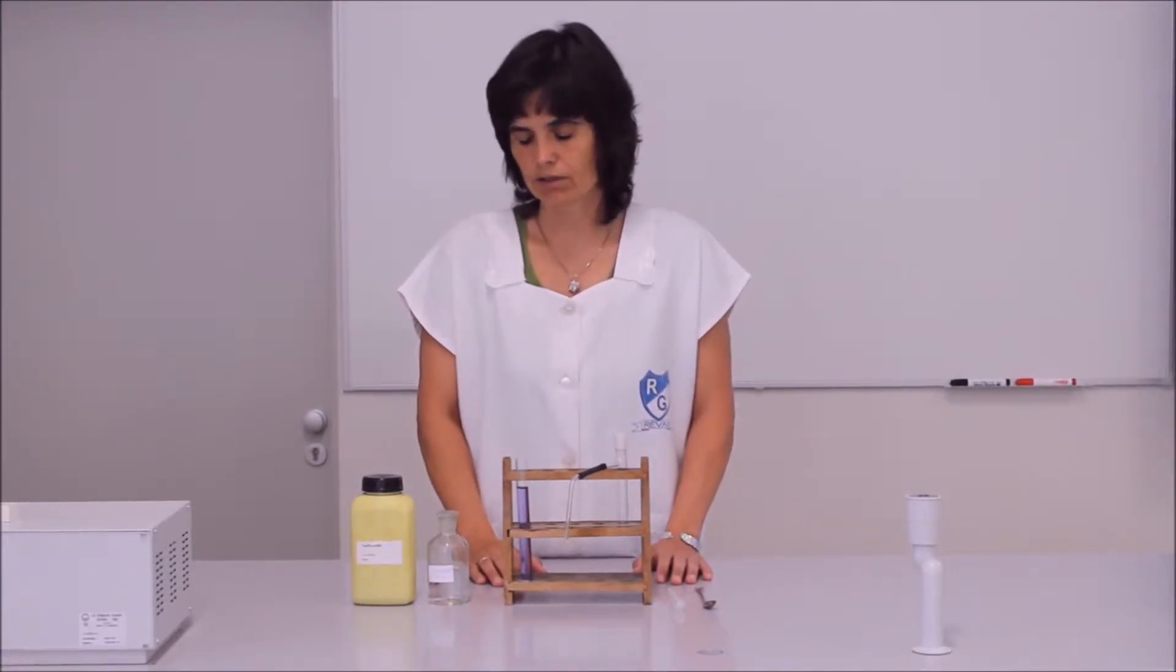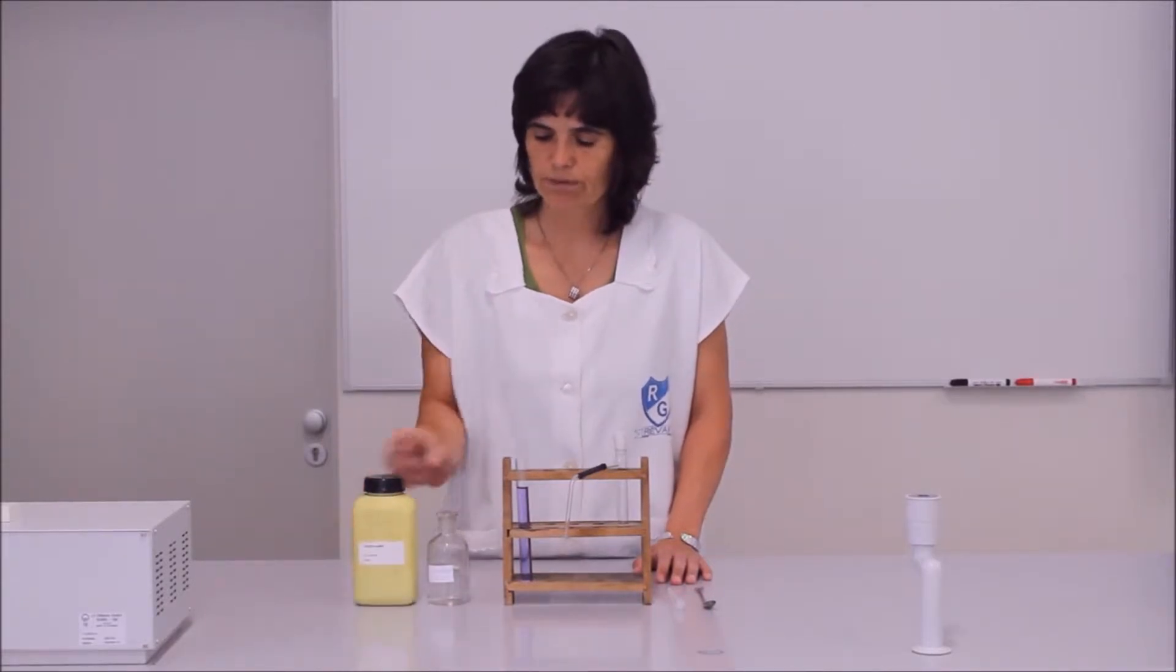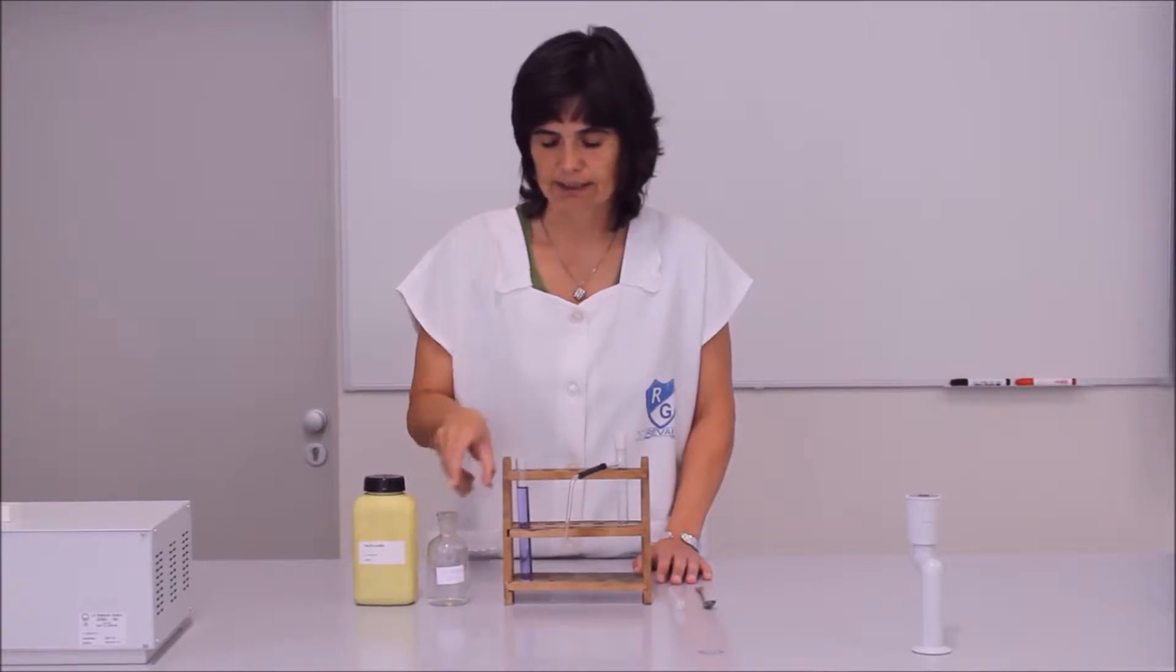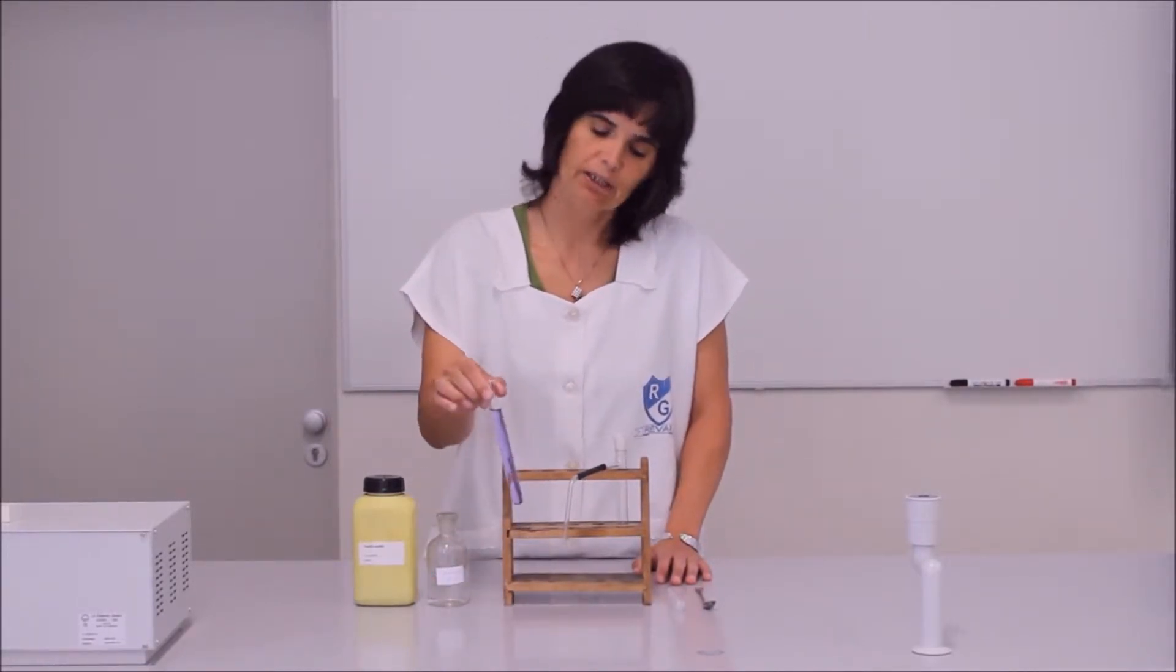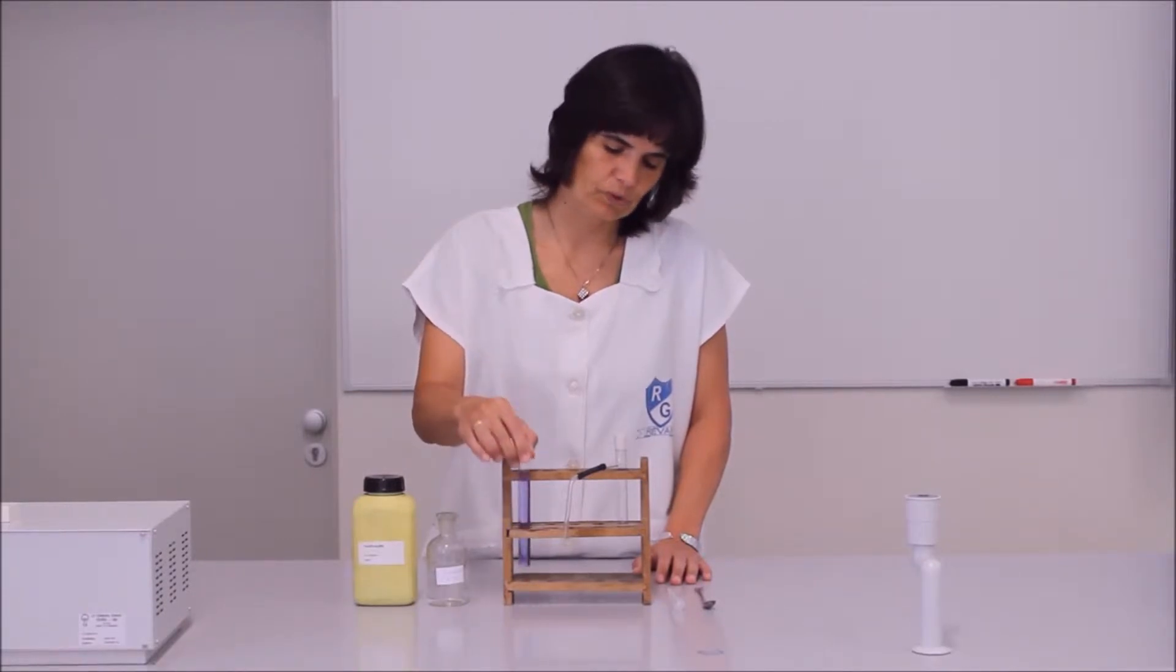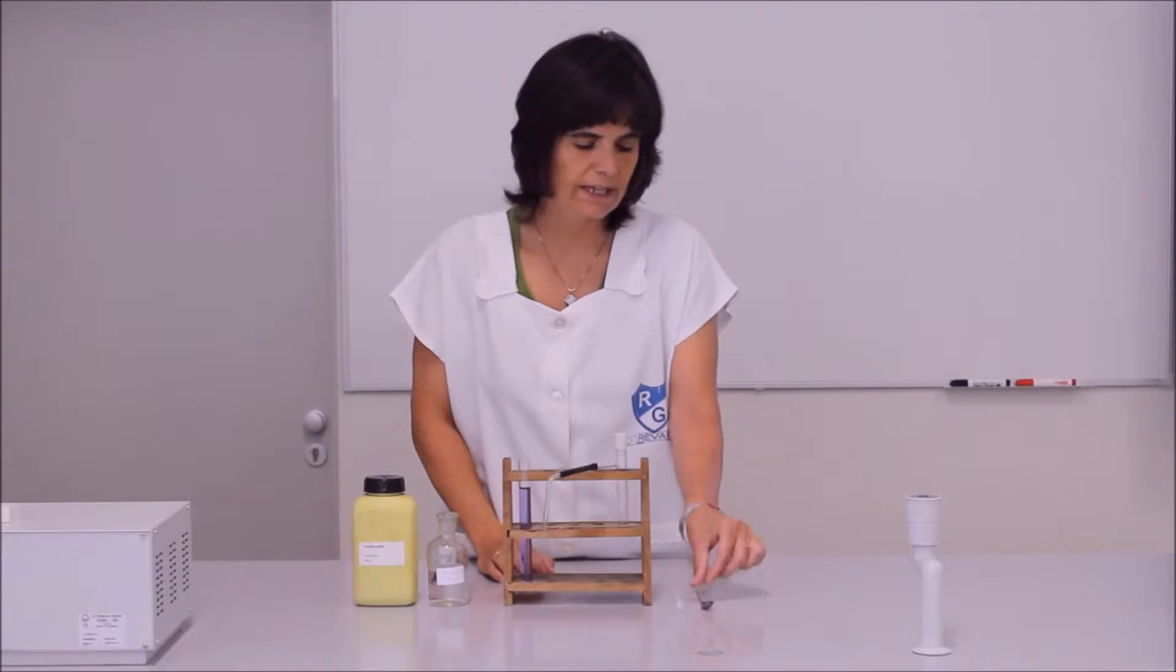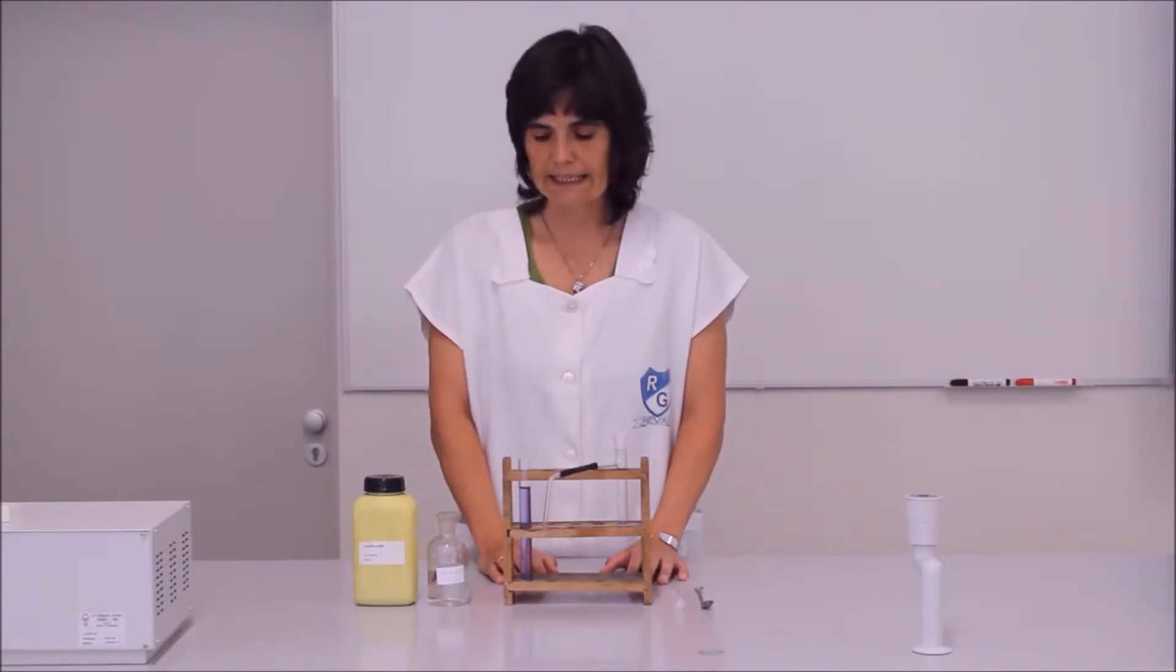Az ehhez használt anyagok és eszközök: Vas-szulfidból és sósavból fogom előállítani a kénhidrogént, ami gáz halmazállapotú. Ebben a kémcsőben kék lakmusz oldat található. Egy oldalcsöves kémcső, vegyszeres kanál és cseppentő, amit még fel fogok használni.